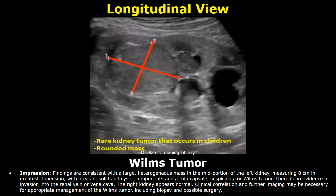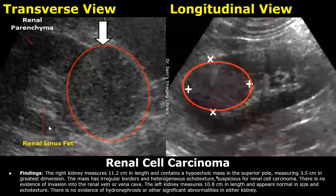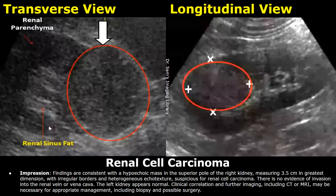The findings for renal cell carcinoma usually include a hypoechoic mass with irregular borders and heterogeneous echotexture. These findings are written in the impression: a hypoechoic mass with irregular borders and heterogeneous echotexture. These findings are suspicious for renal cell carcinoma.